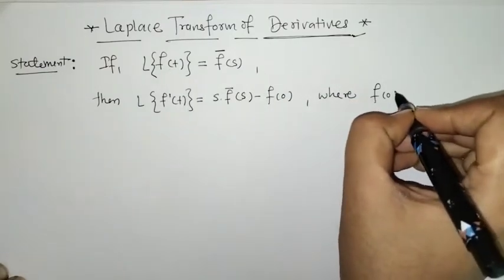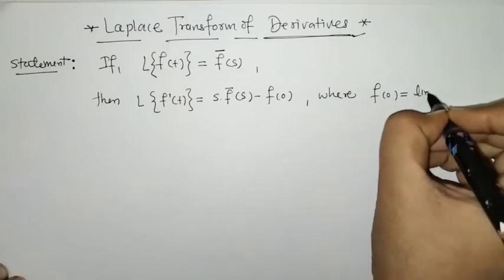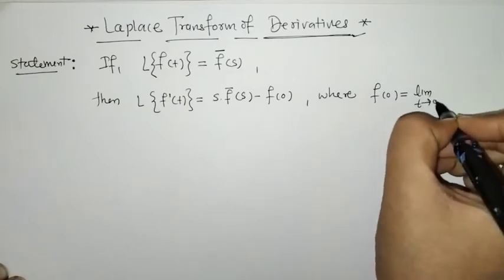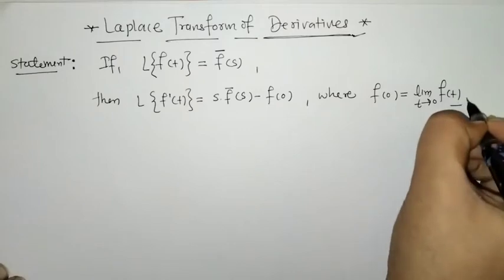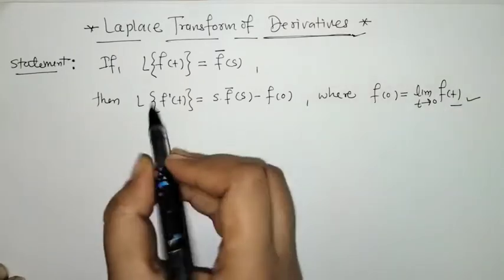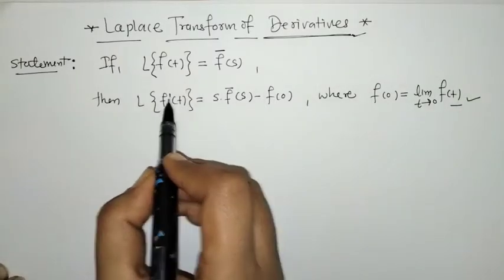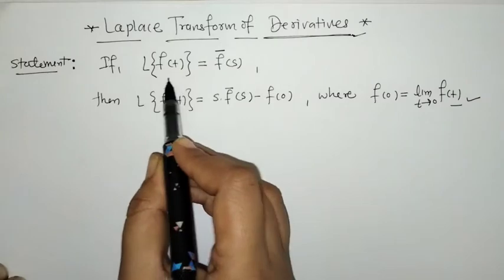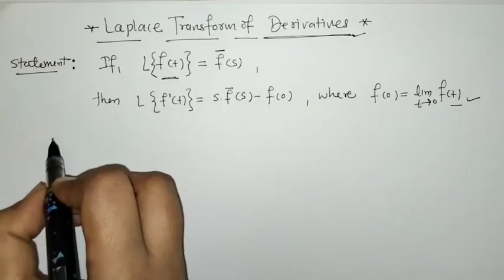So here we have f of 0 equals the limit as t tends to 0 of f of t. And f-dash of t is the first derivative of f of t.